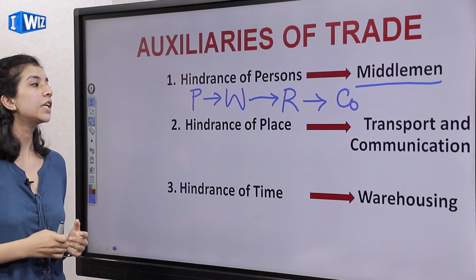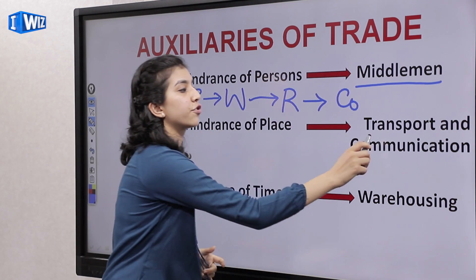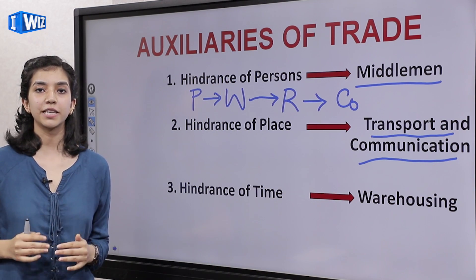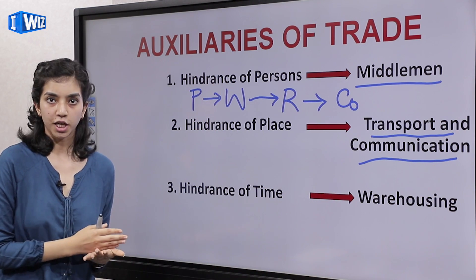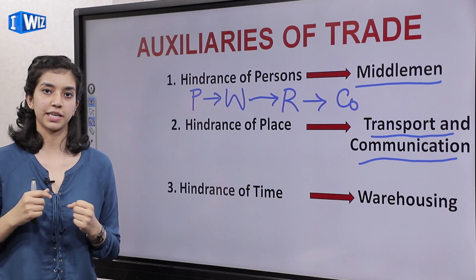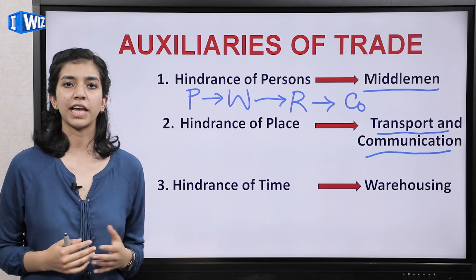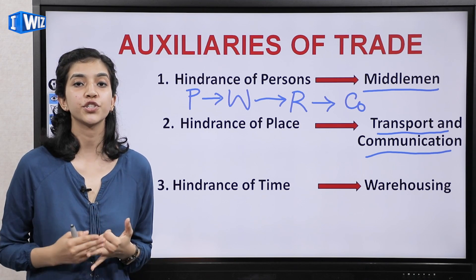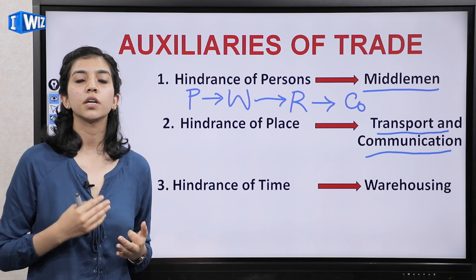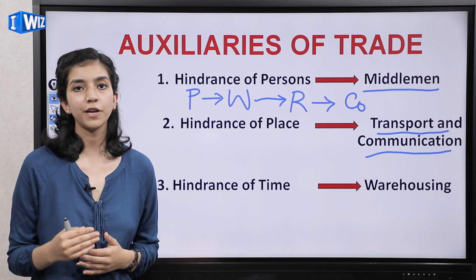The second one is hindrance of place — this is solved by transport and communication. Hindrance of place means the gap between place of production and place of consumption, and this is removed through transportation and communication — like trucks, ships, or even for export, it also goes through flights.